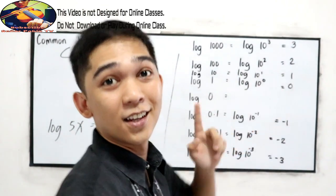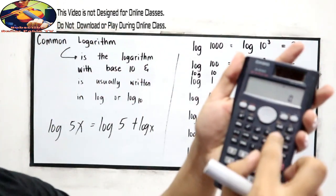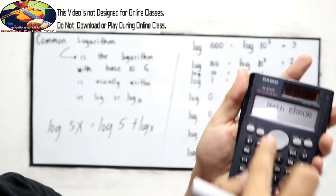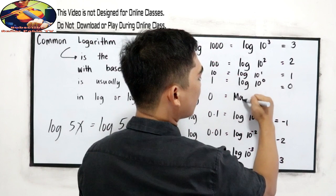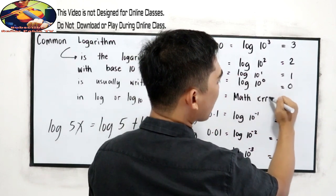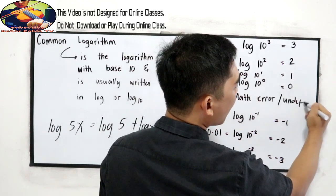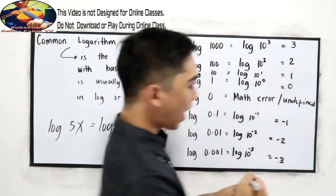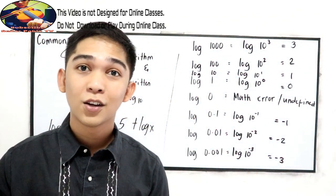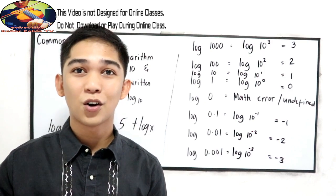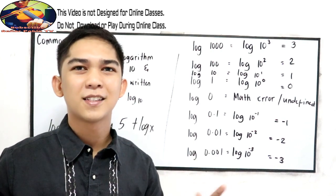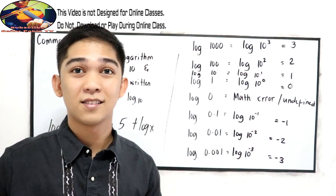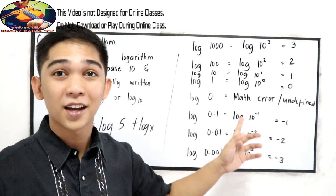Log 0, how about log 0? Log 0 will give us math error in our calculator, or also known as undefined. Why? Following the laws of exponent, we cannot define if we have 0 raised to 0. That is not real. That's why it is undefined.